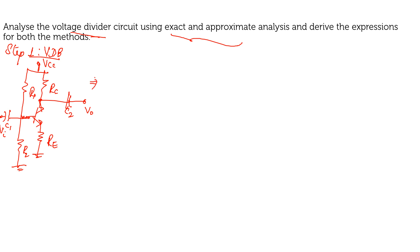Why do we go for voltage divider biasing? The current IB is going to be made independent of beta. That is one of the advantages of voltage divider biasing. In the case of exact analysis, you are going to apply the Thevenin's equivalent circuit across the input side.